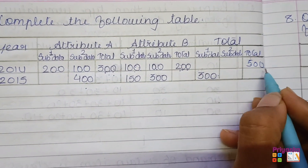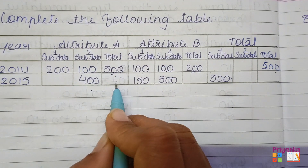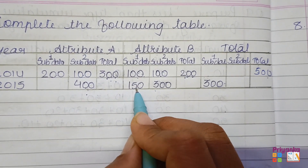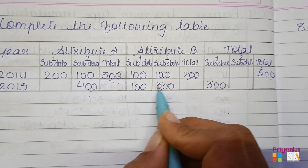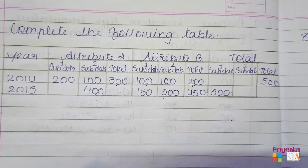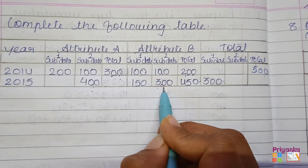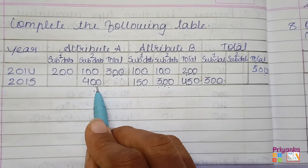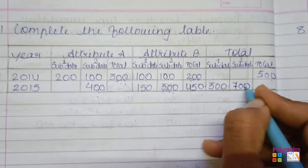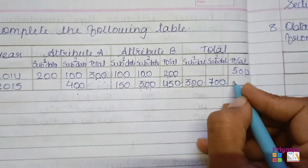300 plus 200 will be 500. Now for the row where only one piece of information is available, move to attribute 2 where both sub-data 1 and sub-data 2 are already given. Adding these two obviously gives the total: here we get 450. Now the sub-data of the second row for attribute A and attribute B is given, so 400 plus 300 will be 700 for the total. Adding the sub-data totals gives 1000.